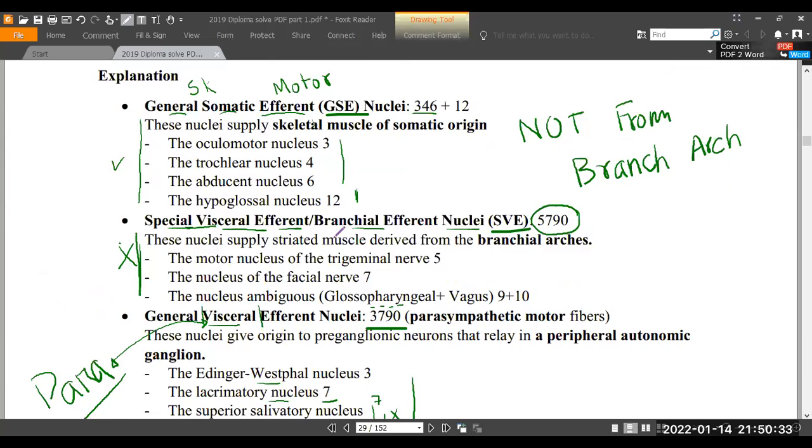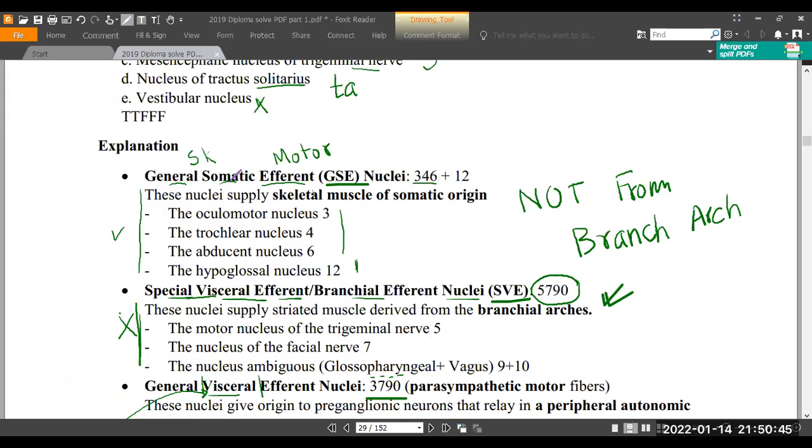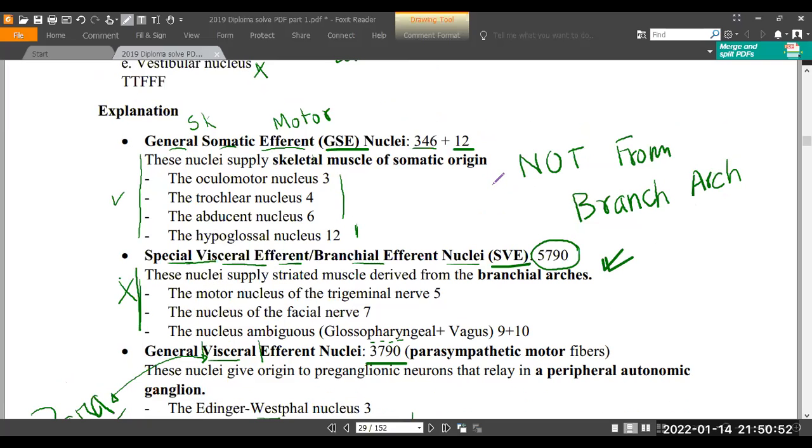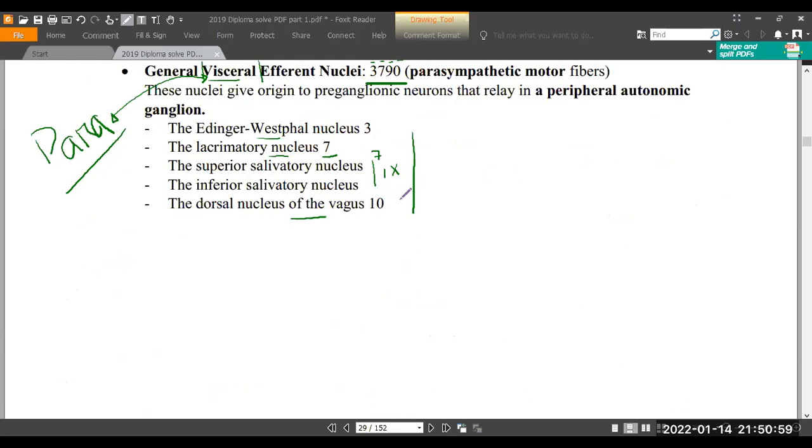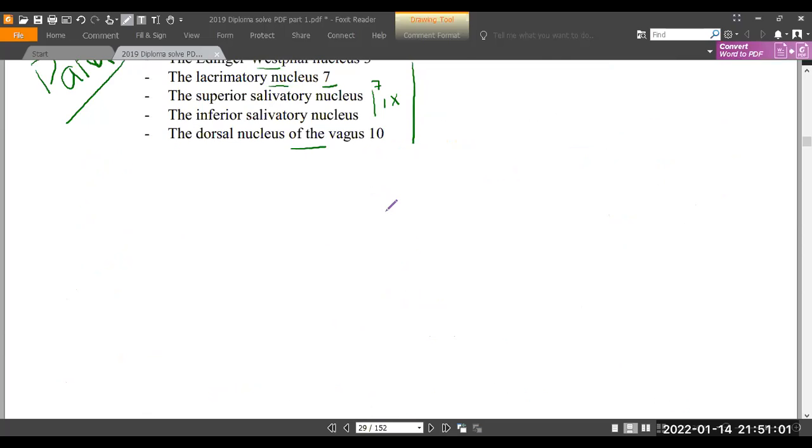So 3, 7, 9, 10 - remember those. 3, 7, 9, 10 are the parasympathetic, so general visceral efferent. Efferent includes branchial efferent 5, 7, 9, 10 - that's the most important thing. Visceral efferent means parasympathetic - 3, 7, 9, 10. Somatic efferent means skeletal muscle other than branchial arch - the pure motor ones are 3, 4, 6, 11, 12. Except for abducens nerve, except for accessory nerve 11.